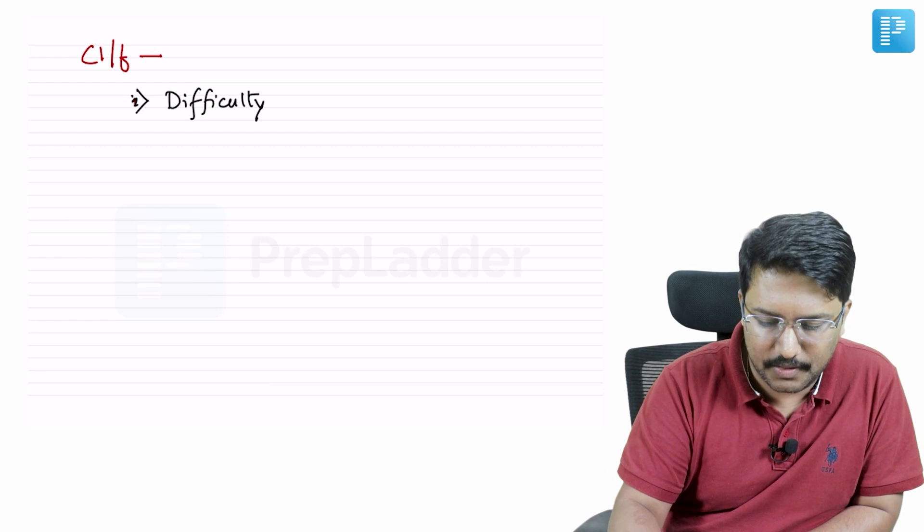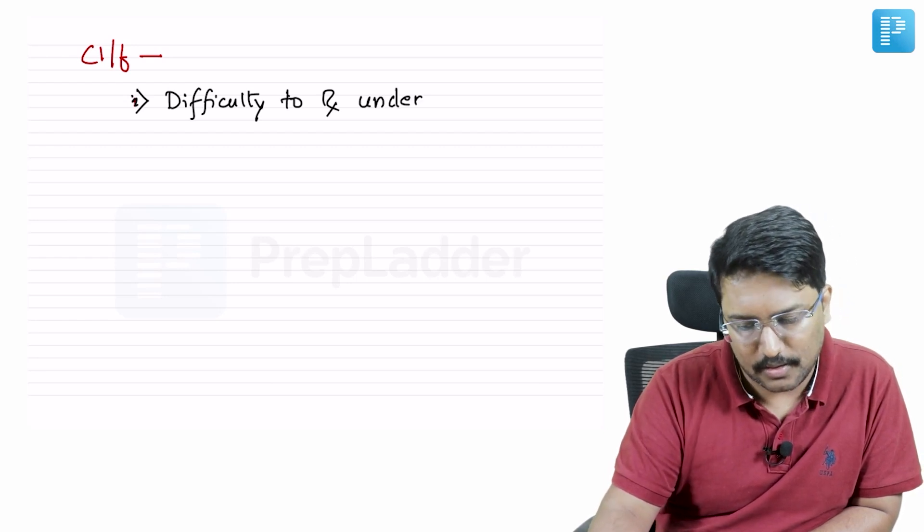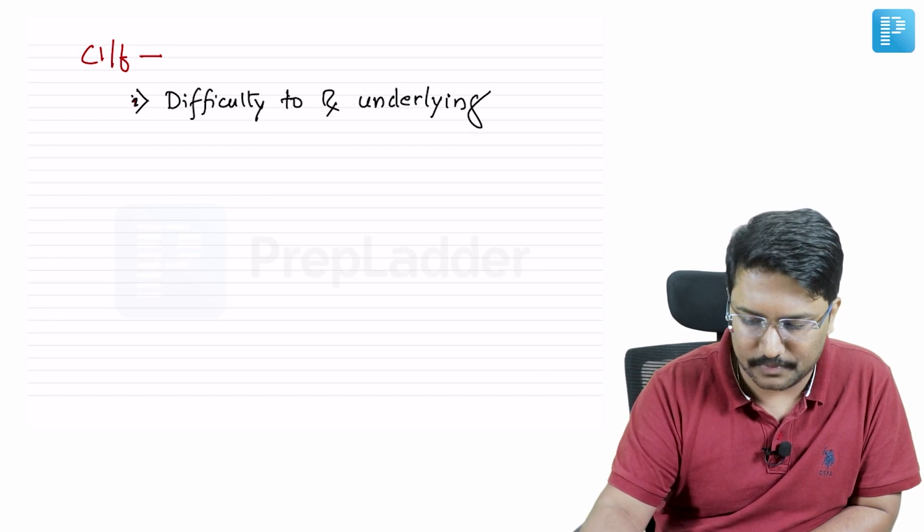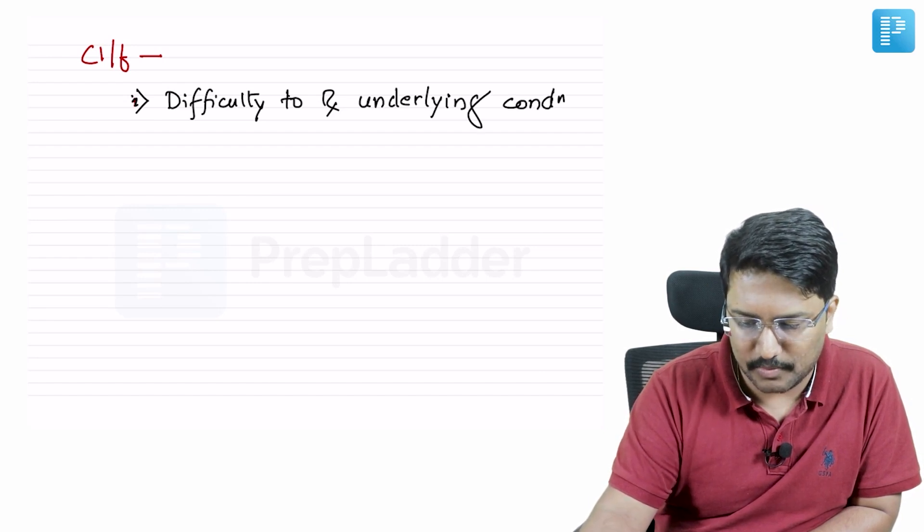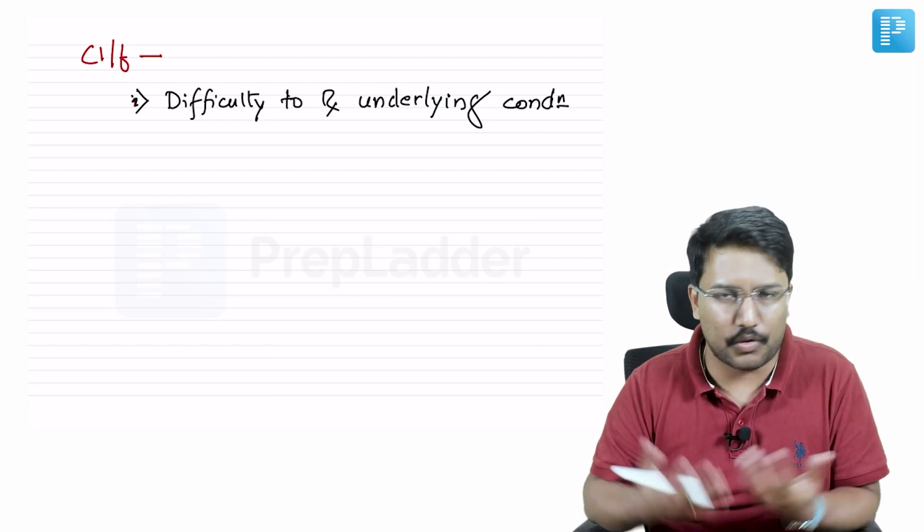What do I mean by that? If you're talking about an asthmatic who was generally well controlled with the combination of ICS plus formoterol or any other long-acting beta agonist, now the control is lost once allergic bronchopulmonary aspergillosis starts occurring.